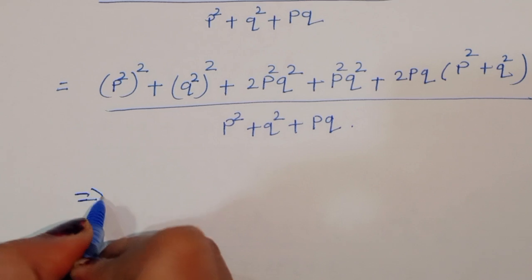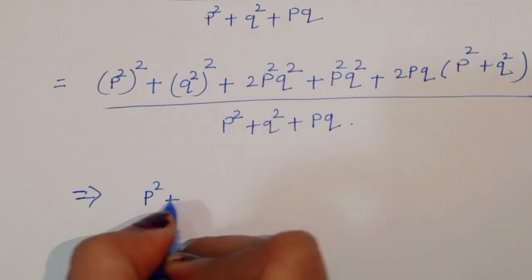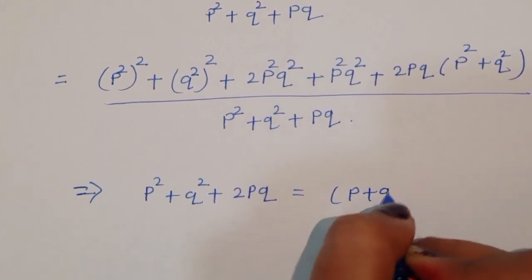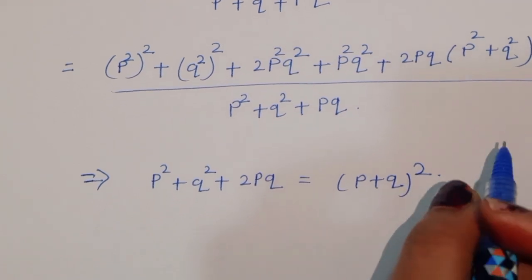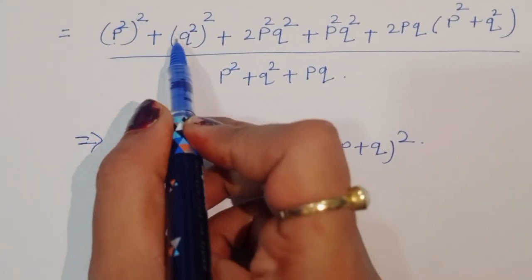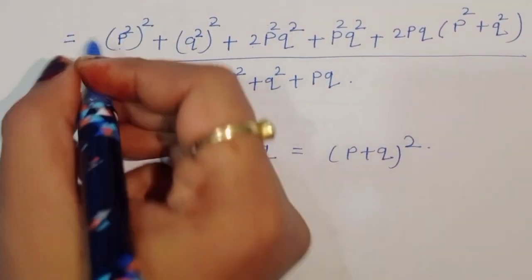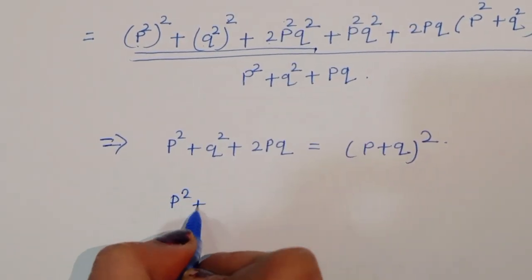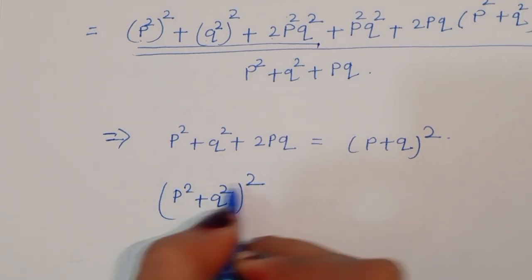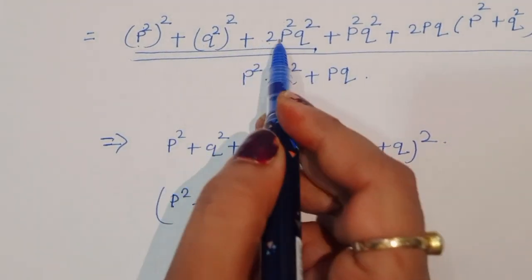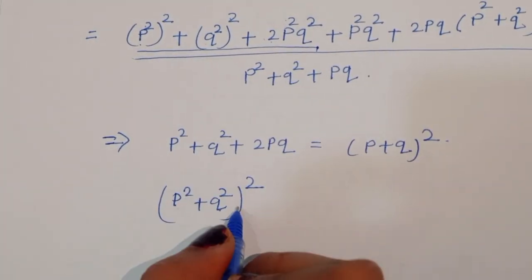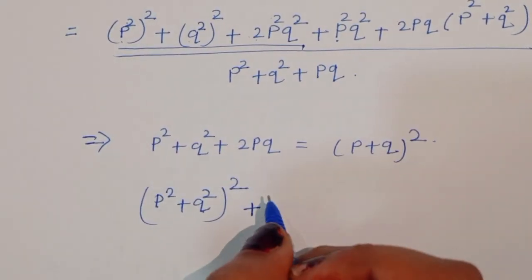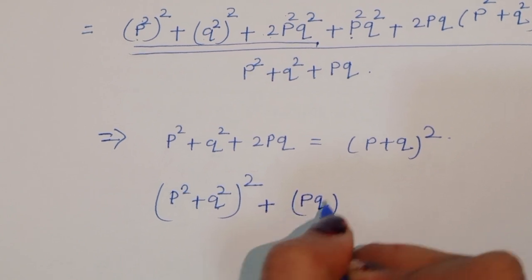We know the formula P² plus Q² plus 2PQ equals (P+Q)². So P⁴ plus 2P²Q² plus Q⁴ is (P² plus Q²)², and P²Q² is (PQ)². The numerator becomes (P² plus Q²)² plus (PQ)² plus 2PQ(P² plus Q²).